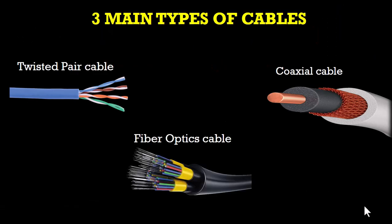For the CompTIA A-plus certification exam, there are three main types of cables you need to know, which are the twisted pair cable, fiber optic cable, and the coaxial cable.